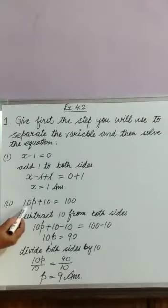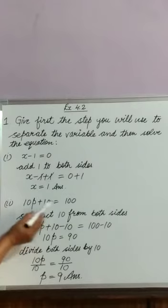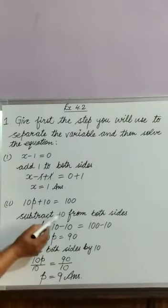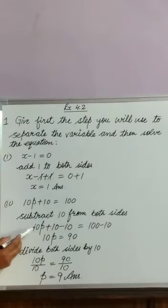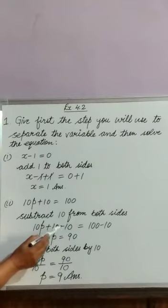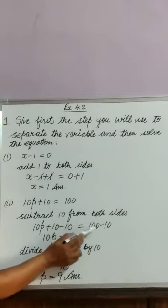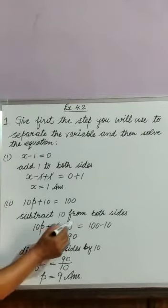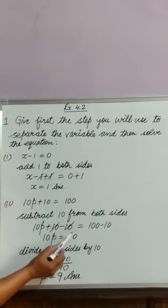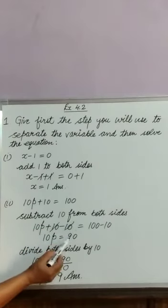Now second question is: 10p plus 10 is equal to 100. Here 10 is added. Opposite of addition is subtraction, subtract 10 from both sides. 10p plus 10 minus 10 is equal to 100 minus 10. 10 cancelled with 10. 10p is equal to 90.